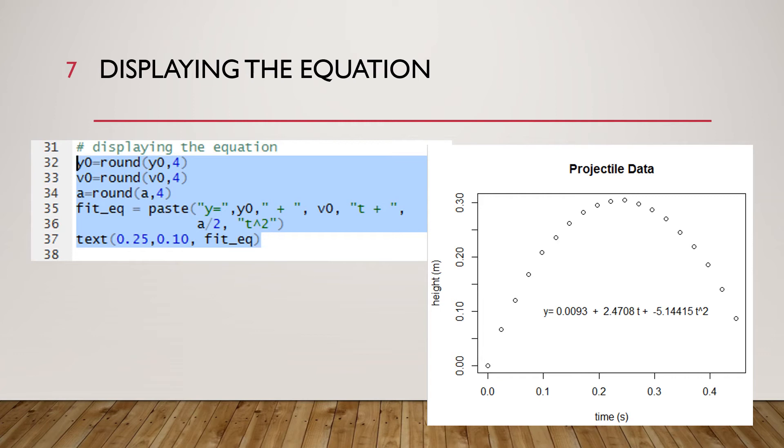Then we want the initial velocity parameter and that multiplies a t and then there's another plus. Then I want another number, I'm taking my a and back to the regular parameter dividing it by 2, and then finally an explicit t to show them that it multiplies t squared and close off the parenthesis. That creates the equation.